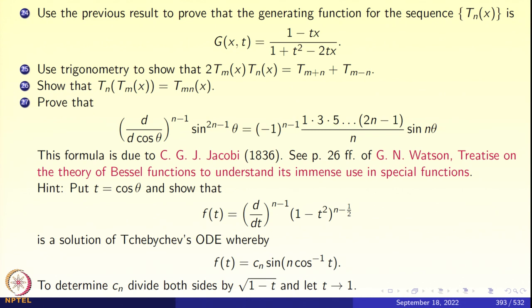The idea is to put t = cos θ and look at what happens when you differentiate (1 − t²)^(n−1/2) n−1 times. The left-hand side becomes d^(n−1)/dt^(n−1) of (1 − t²)^(n−1/2), which satisfies the Chebyshev ODE. So the LHS is basically f(t) = c_n · sin(n · cos⁻¹(t)), and then you determine c_n from the given hints. This is more an amusing piece of exercise.